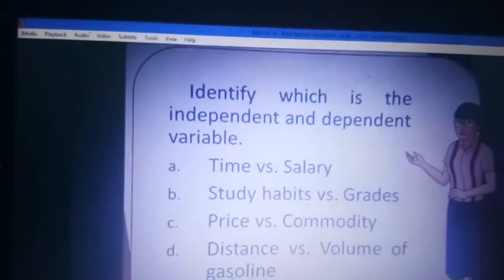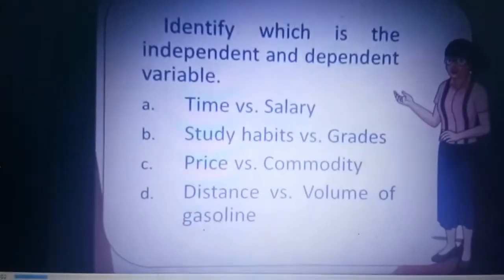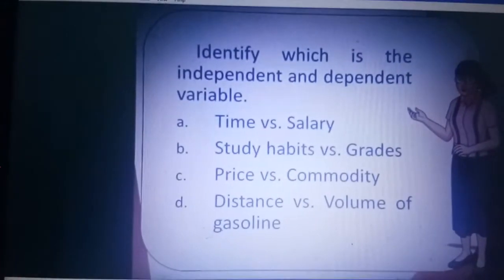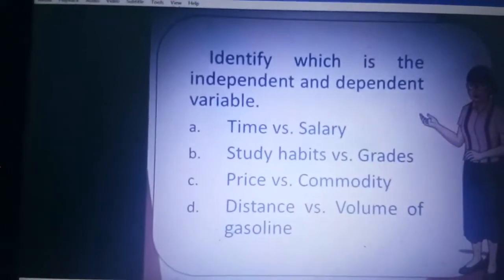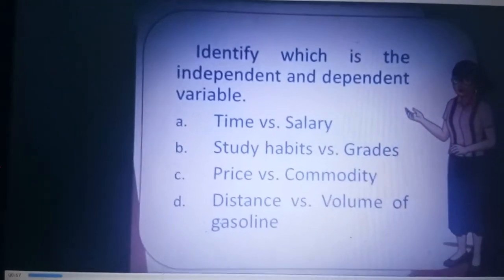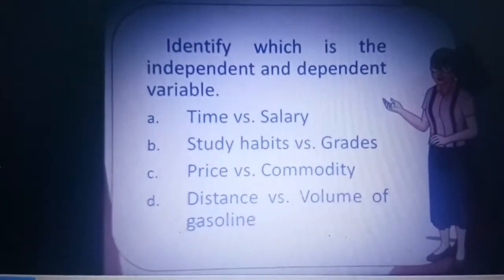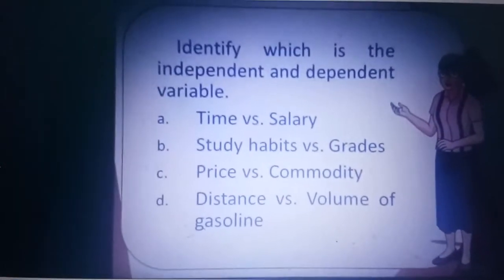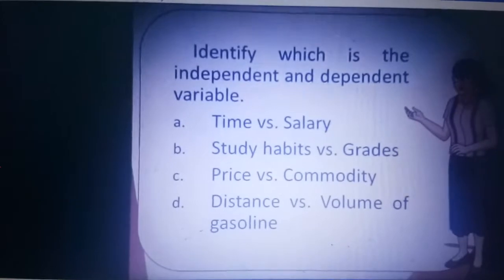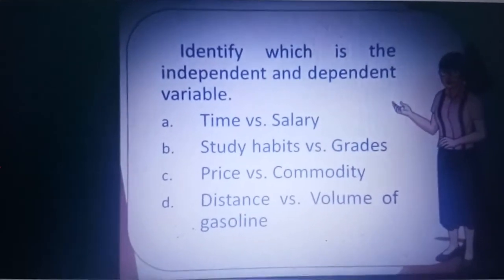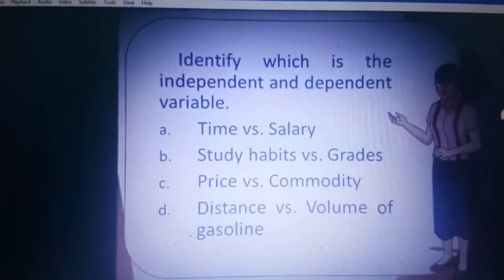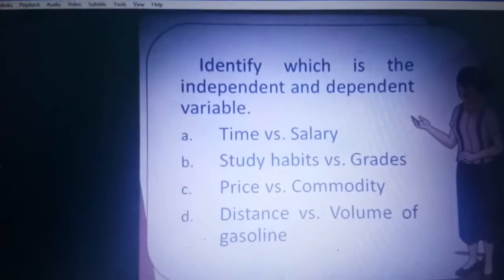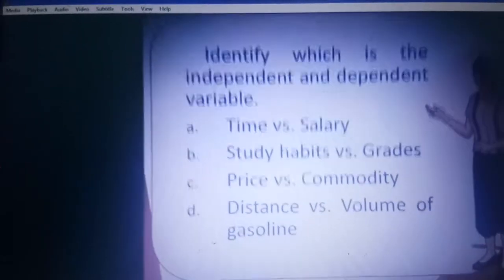We're going to identify which is the independent and dependent variable. In the given examples, we have: time versus salary, study habit versus grades, price and commodity, distance, and volume of gasoline.